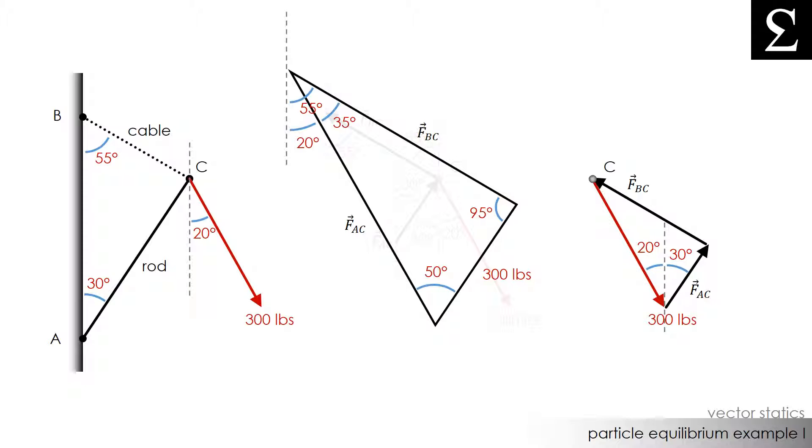Now that we know the angles of this force triangle we can simply calculate the magnitudes of FAC and FBC using the law of sines. We see that the sine of 35 degrees divided by 300 pounds is equal to the sine of 95 degrees divided by the magnitude of FAC is equal to the sine of 50 degrees divided by the magnitude of FBC.